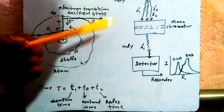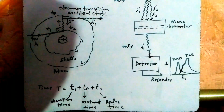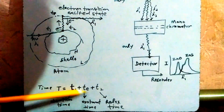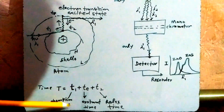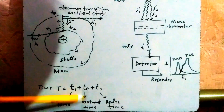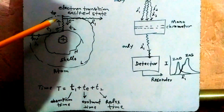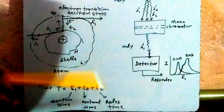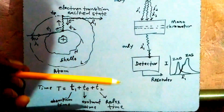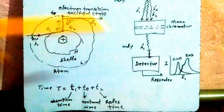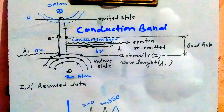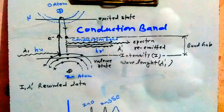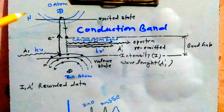This is the phenomenon underlying photoluminescence. The timing involves t1 (absorption time), te (excitation time, during which the electron stays in the excited state), and t2 (relaxation time, when the electron comes back down to the original energy state).